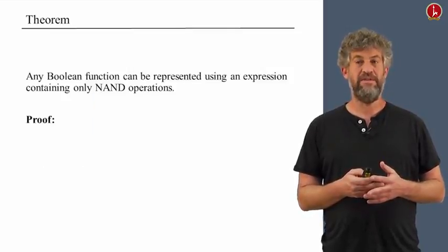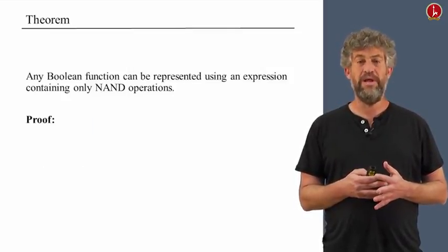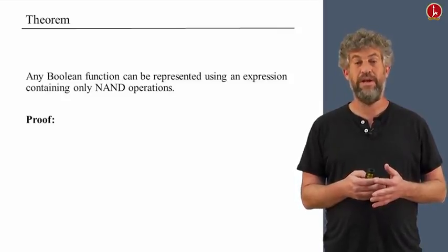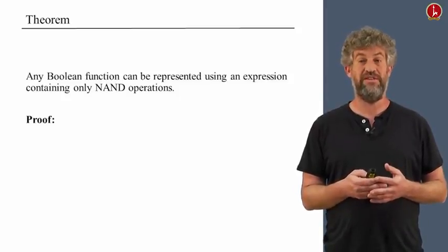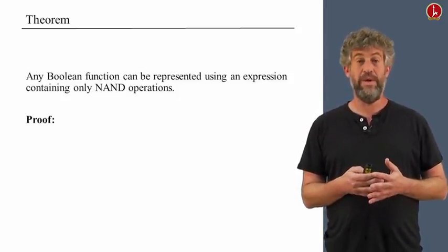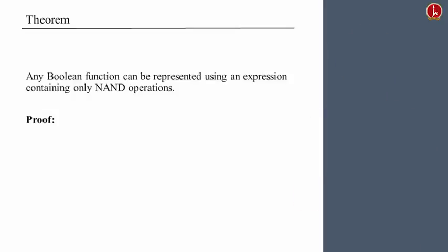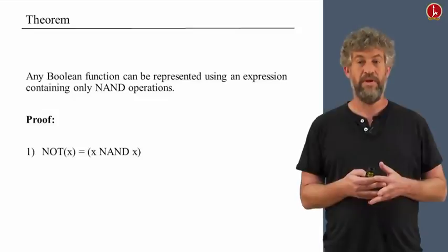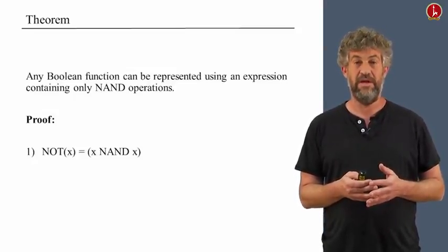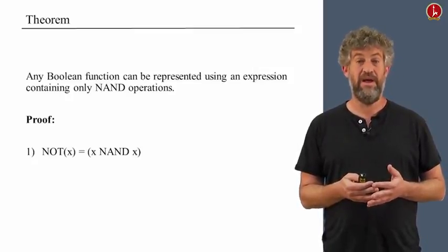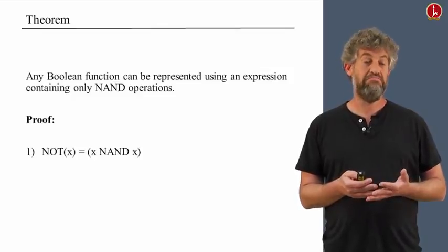Well, the nice thing is that we can prove the following theorem. That if you only have NAND gates, you can already compute every Boolean function. You can already represent every Boolean function as an expression using just these NAND gates. How do we prove that? Well, we know that if you can do NOT and if you can do AND, you can do everything. So we just have to show how to do NOT with NAND gates and how to do AND with NAND gates. So here's how you do NOT. If you just look what happens when you feed x to both inputs of the NAND gate, you plug it into the truth table. And you can see that NOT x is really represented by x NAND x. That's part one.